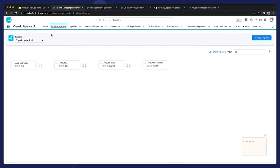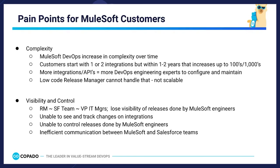We are going to give a short demo of MuleSoft DevOps on Capato. Starting with the current pain points: MuleSoft DevOps tends to increase in complexity over time as the number of integrations grows. This requires additional DevOps engineers for maintenance and support, and release managers are generally not equipped to handle this complexity. In addition, visibility and control are missing, as release managers cannot easily see and track changes done by MuleSoft engineers, leading to a loss of release control due to inefficient communication.